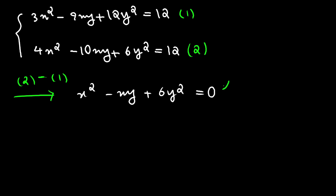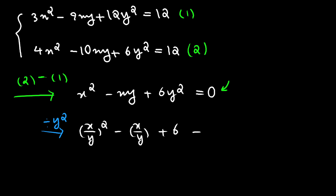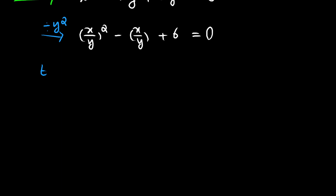Now we have 0 on the right-hand side, which gives us the ability to use the smart trick to find a relation between x and y. We divide both sides by y squared to get (x/y) squared minus (x/y) plus 6 equals 0. Replacing x/y with t gives us t squared minus t plus 6 equals 0.